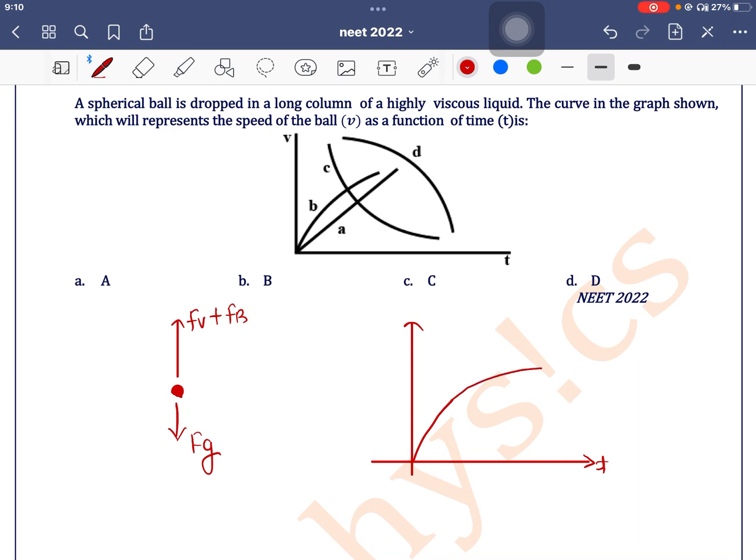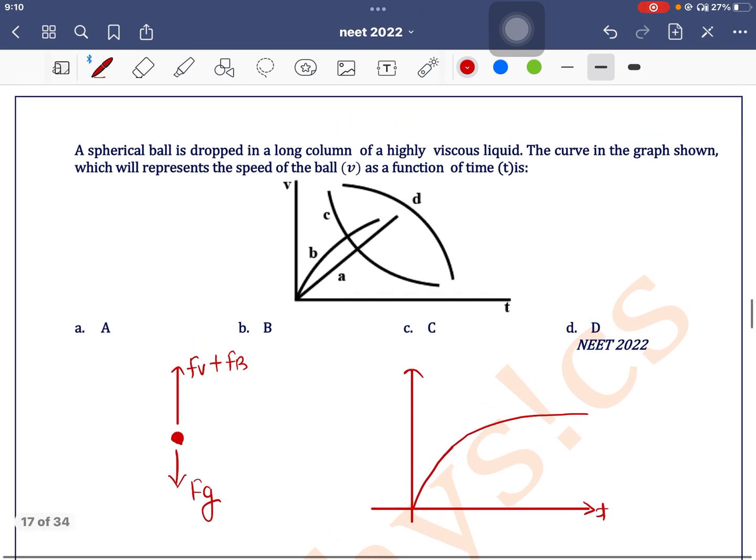So the graph looks like this. So which matches with option B. So option B is the correct one.